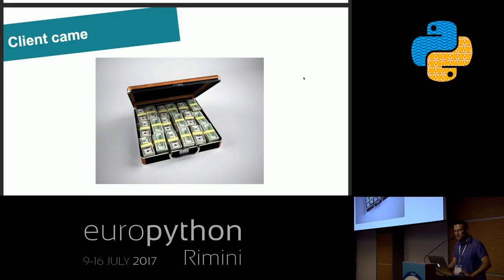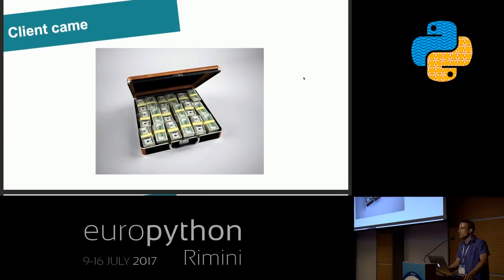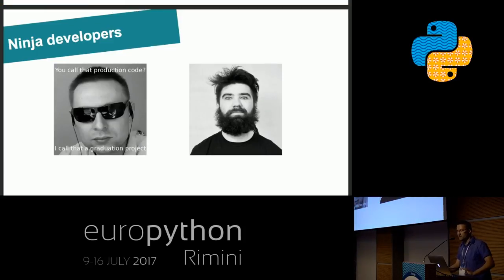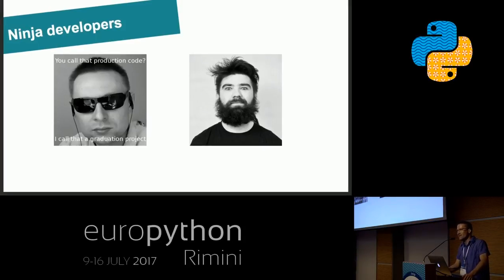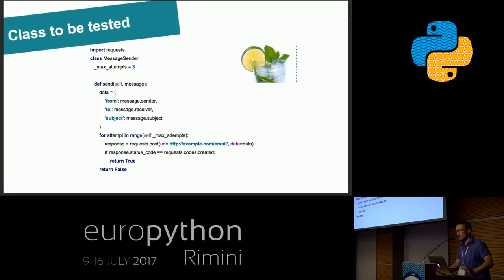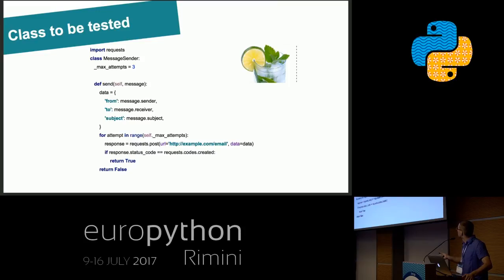Let's say a client came to us and asked us to create an application which will receive emails. From those emails we will take some data and then send it to some endpoint using REST API. It seems to be a very simple application. We take our best developers — I call them Ninja developers — and after a few days they create very good code. This code will contain a class called MessageSender. MessageSender has a send method which takes a message as an argument. From the message it takes sender, receiver, and subject.